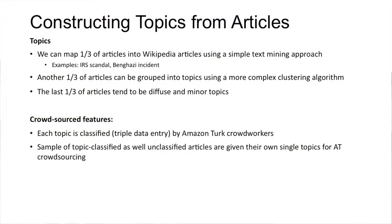We have two different ways to classify articles. One is a basic Wikipedia categorization where we match articles to existing Wikipedia articles — most news stories actually have their own dedicated Wikipedia article, and that works very well. For things that don't have their own Wikipedia article, we use a more complex method that looks at networks of terms and puts groups of articles that are in a closed sub-network into a topic. That actually worked amazingly well; we tried a whole bunch of other methods and nothing came close, even though it's kind of ad hoc.